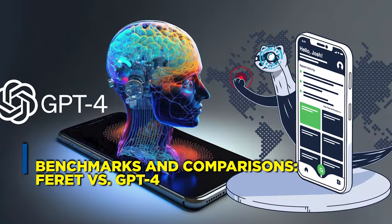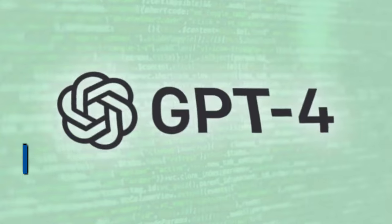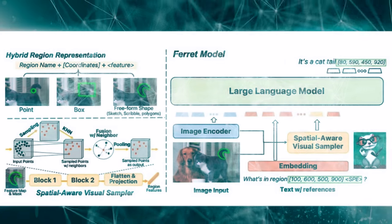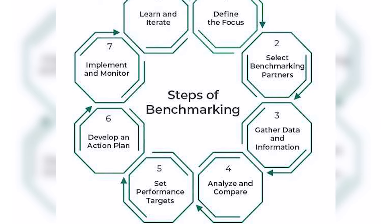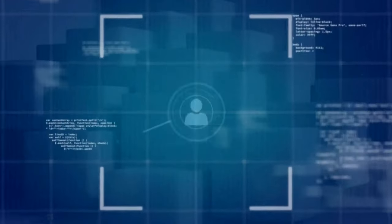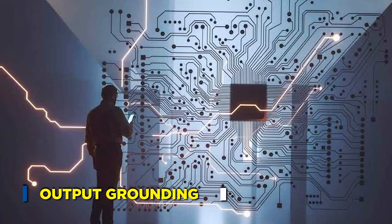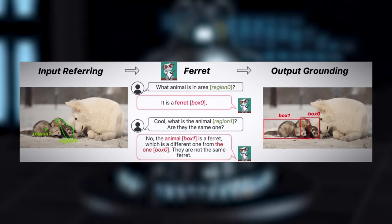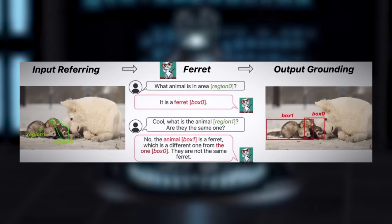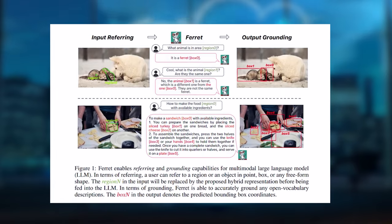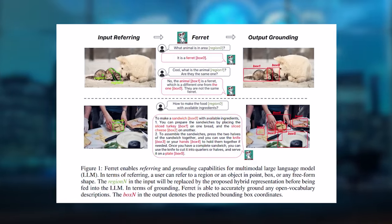Benchmarks and Comparisons — Ferret vs. GPT-4: When subjected to benchmarks alongside GPT-4, the Ferret model emerges as a frontrunner in various dimensions. The benchmarks, encompassing input types such as point, box, and freeform, highlight its exceptional performance. A key point of distinction is output grounding: Ferret exhibits outstanding output grounding, showcasing a robust understanding of the intricate relationships between objects and images. This proficiency is particularly evident in scenarios where pinpointing small and specific regions in images is crucial.